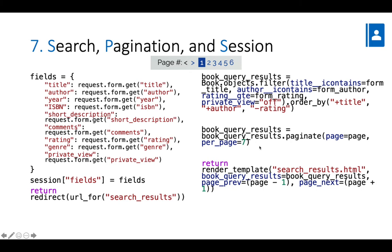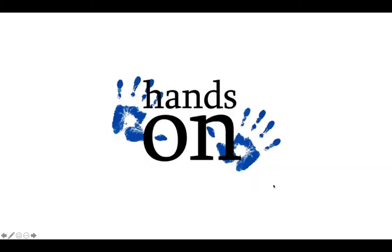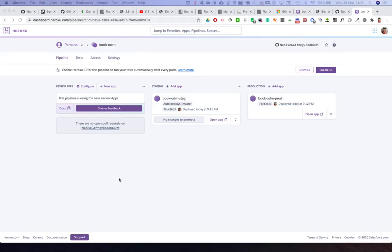We then provide those results using the paginate function - in this case seven books per page rather than five, just to show you it can be changed - and render them in a similar way in a new template.